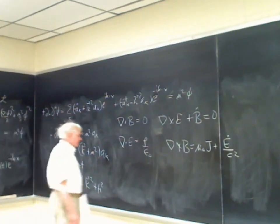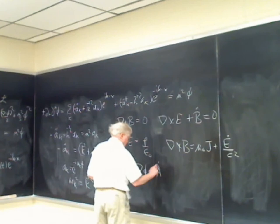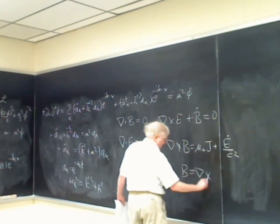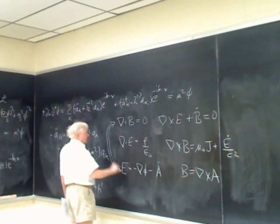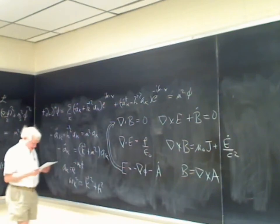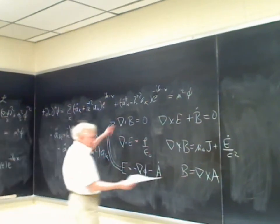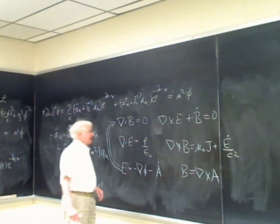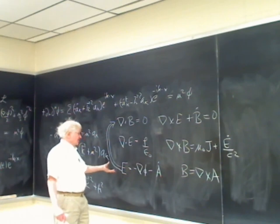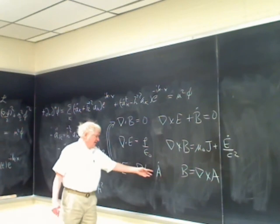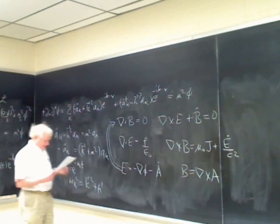We introduce scalar and vector potentials: E = −∇φ − Ȧ, and B = ∇×A. These two definitions imply the homogeneous Maxwell equations — in particular, the divergence of a curl is zero, and taking the curl of E gives −Ḃ with the curl of a gradient vanishing.